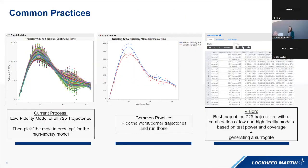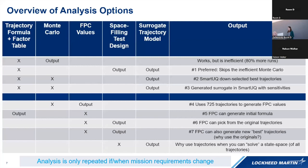Advancing past that current process is our ultimate vision: the best map of the 725 trajectories with a combination of low- and high-fidelity models based on test power, coverage, and generating a surrogate. To approach that vision, we took a close look at what outputs we could potentially generate from any given input. For example, provided with a factor table, an analysis team could theoretically output a space-filling test design and a surrogate trajectory model — identified as option number one. We'll be going through all seven options. Working below the blue line signifies no longer working with a factor table as a direct input.